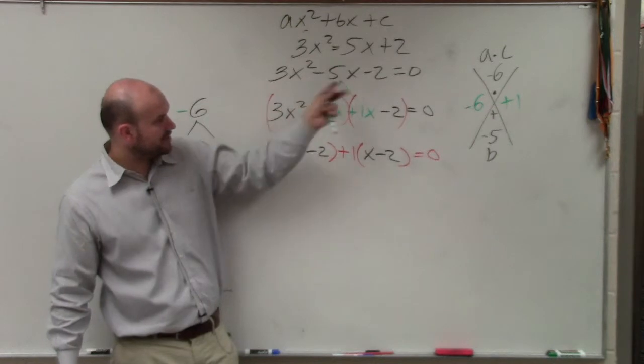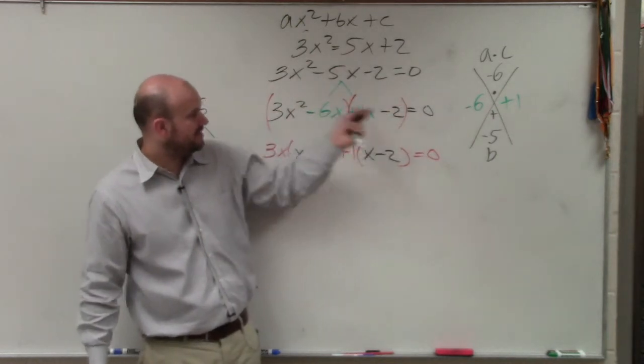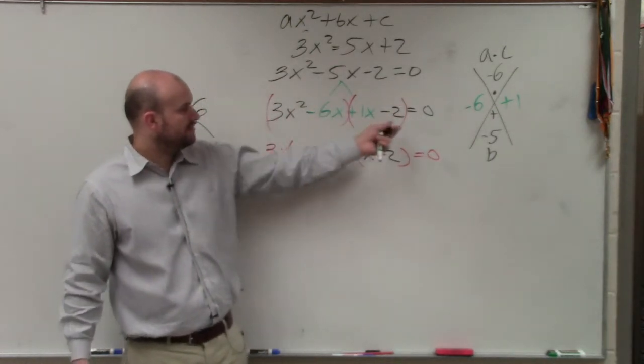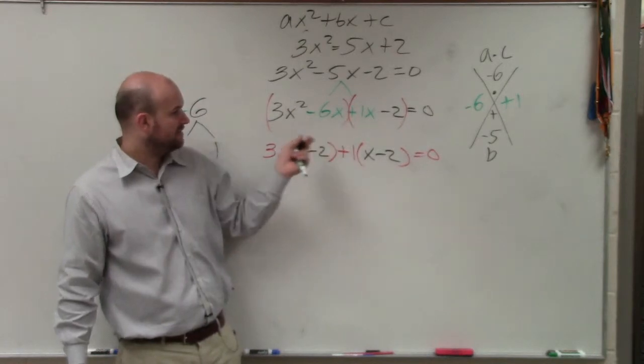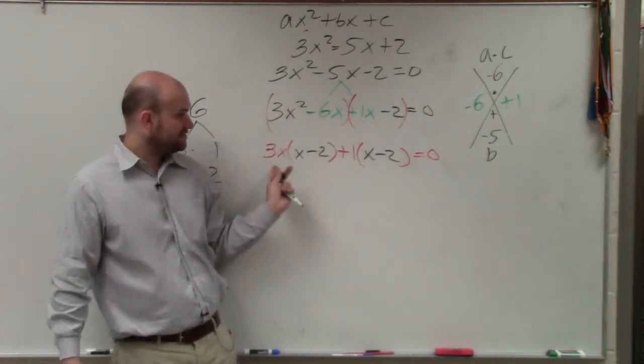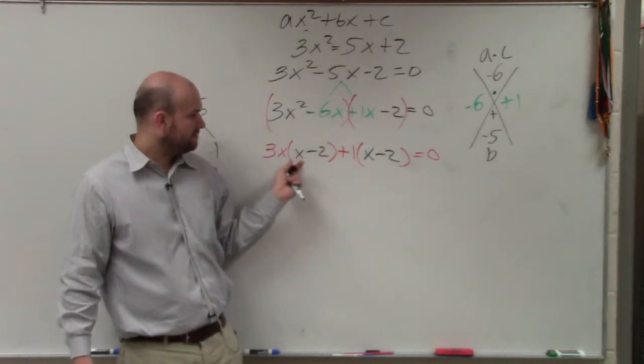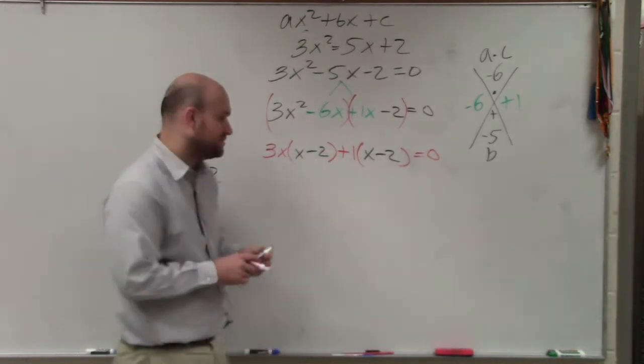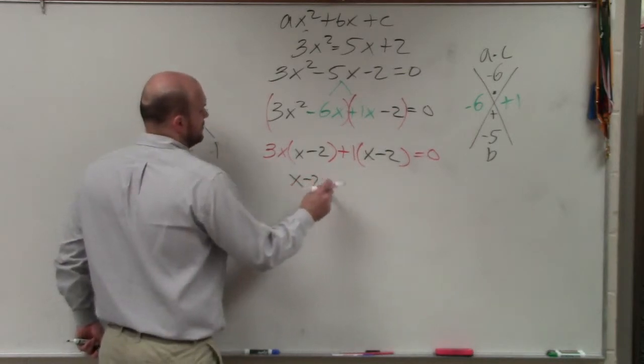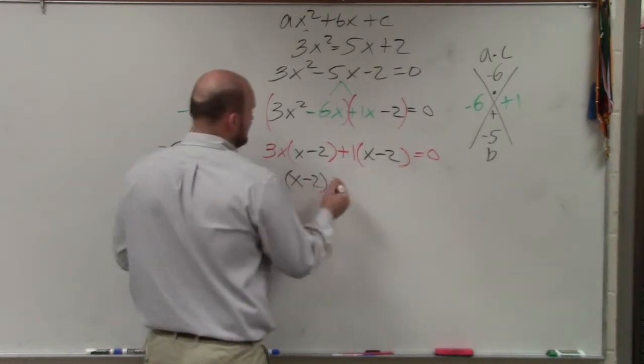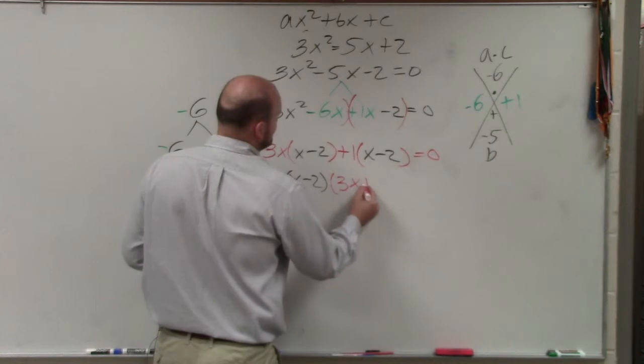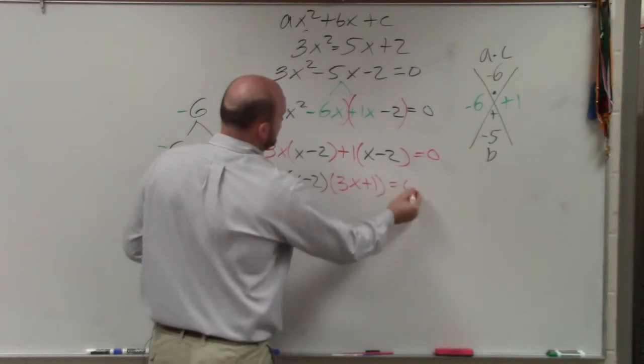Then I grouped the first two terms, grouped the last two terms, factored out the GCF, factored out the GCF. The common factor of this is 3x. A common factor of this was positive 1. Now, they have a common factor of x minus 2 and x minus 2. And by factoring that out, I'm left with a 3x plus 1 equals 0.